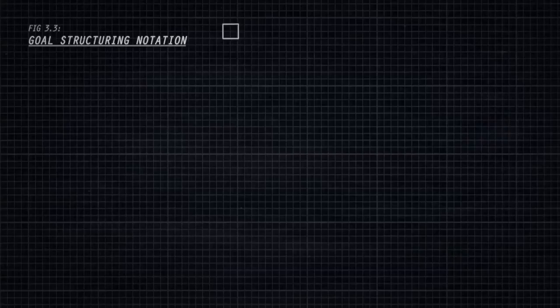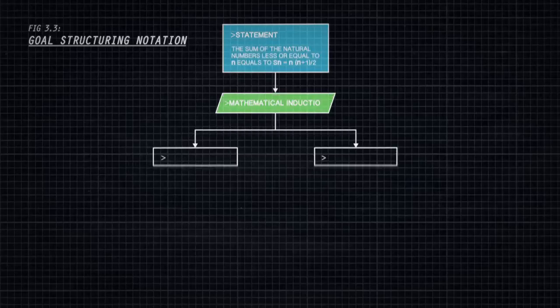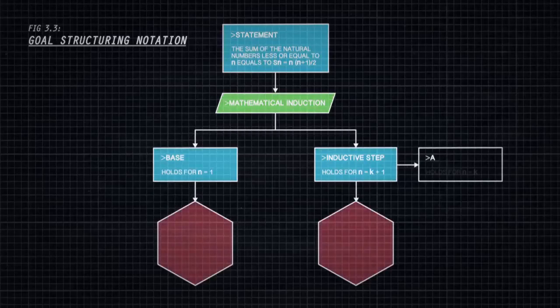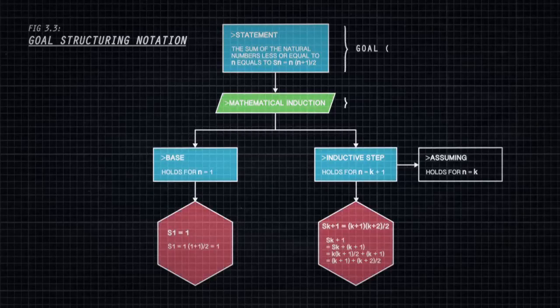To improve industrial practice in developing and presenting safety case arguments, the High Integrity Systems Engineering Group at York developed the Goal Structuring Notation, GSN. GSN was developed to tackle the challenges in safety case development. It's a graphical argument notation which can be used to document explicitly the elements and structure of an argument and the argument's relationship to evidence.